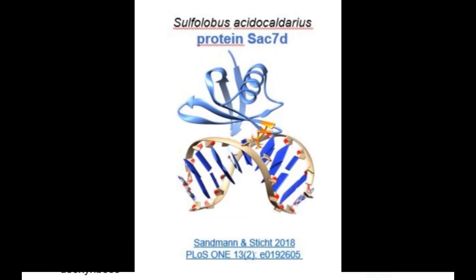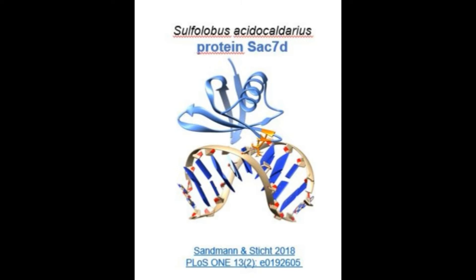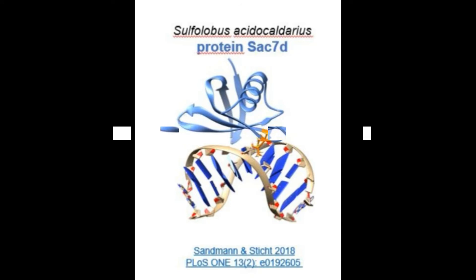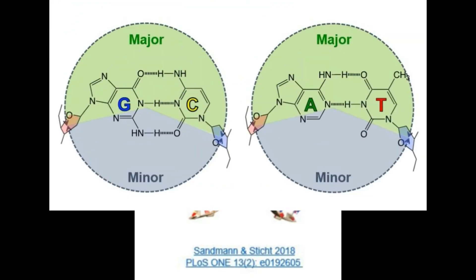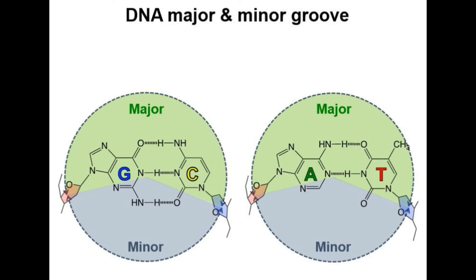There also exists a protein called Sac7D, which can intercalate between the bases and cause certain DNA kinks. This allows the protein to bend the DNA by coming in contact with it. Sac7D binds to the minor groove, and it is a very non-specific position for it to intercalate into.